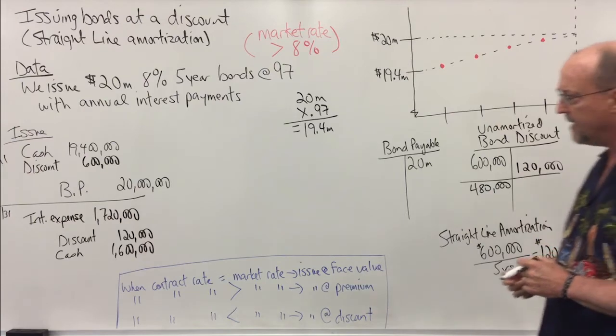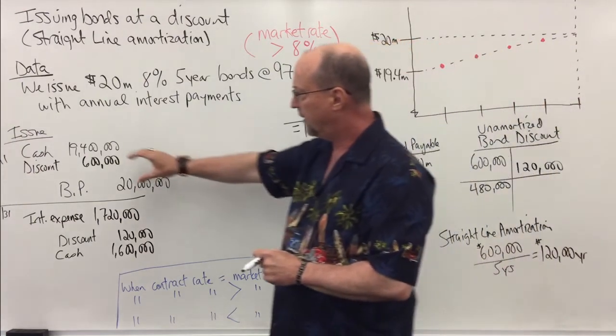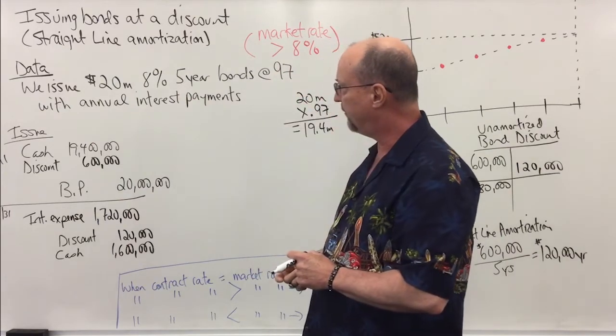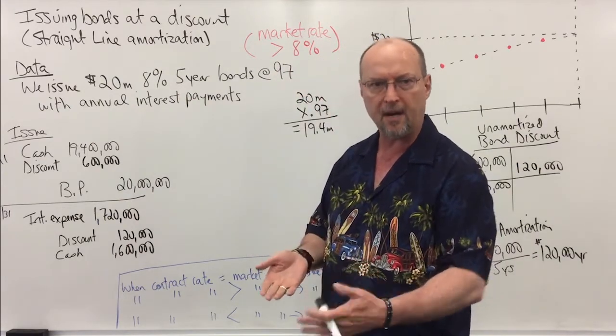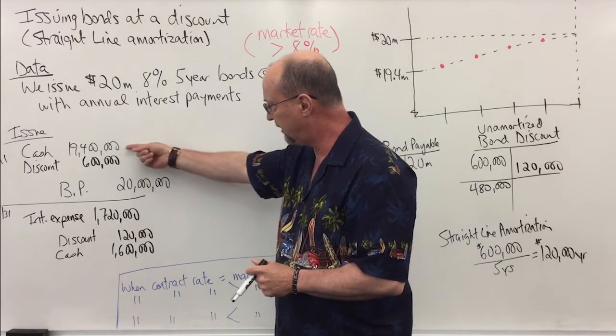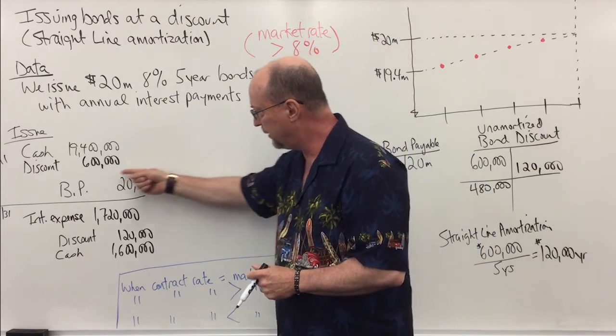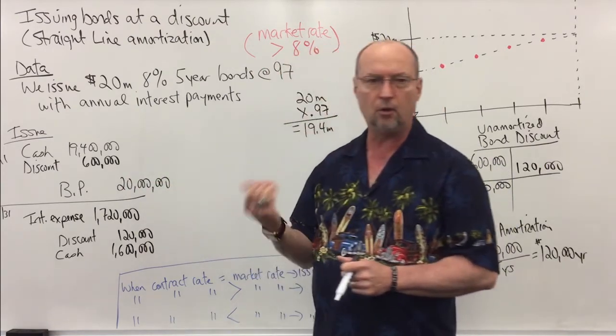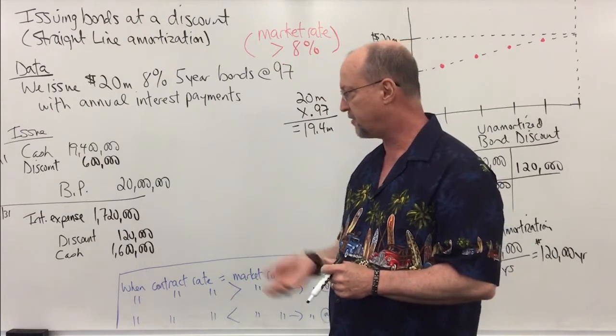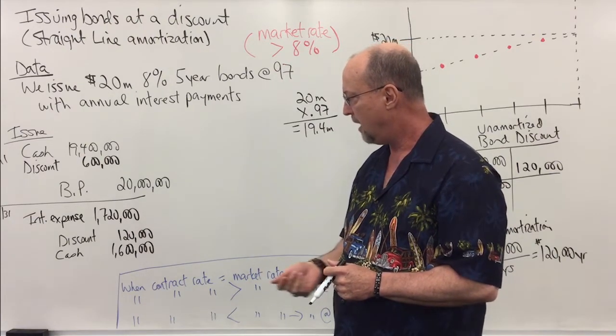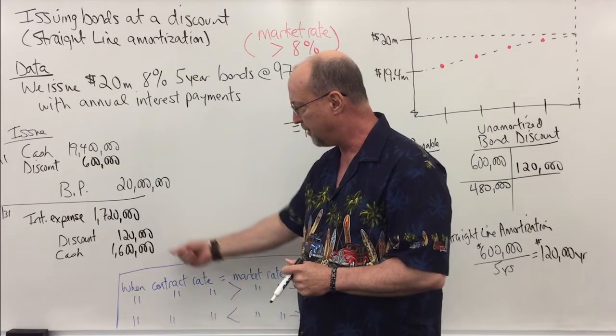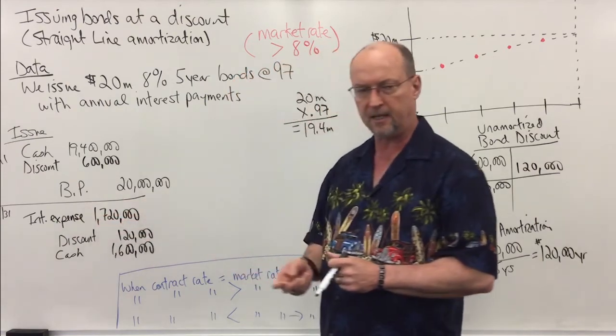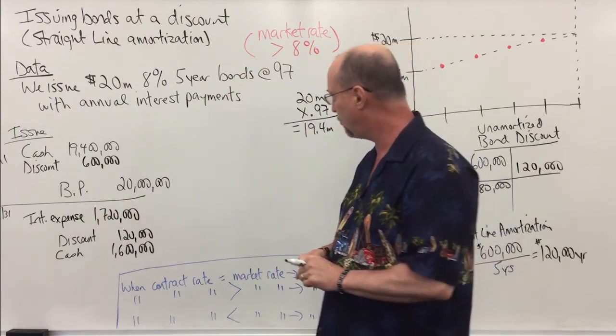Okay, and so on the date of issuance, here's our journal entry if we issue the bonds at 97 or 97% of face value. And if it's any other number, you simply multiply that by the face value. Here's the amount of cash proceeds, here's the discount. We always credit bonds payable at face value. And when we pay interest, which could be, as normally semi-annually, twice a year, but in this case for simplicity we just use annual, I'm going to pay $1.6 million. I amortize one year's worth of the discount, $120,000, and that will increase my interest expense that I report on the income statement to $1 million $720,000.